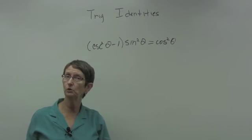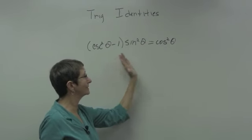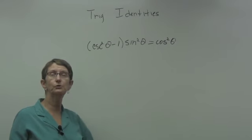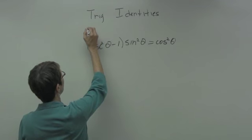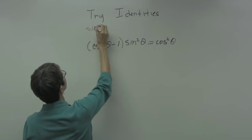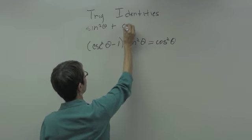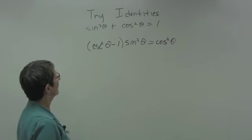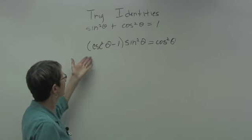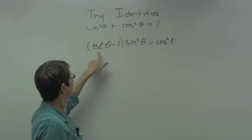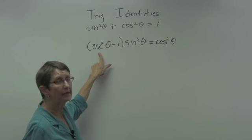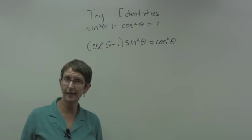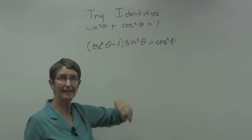In general, what we want to use when we're trying to get one side equal to another side, or just to simplify a trig expression, is to use the Pythagorean identity: sine squared theta plus cosine squared theta equals 1. I don't really have that here — I have a sine squared, but here's a cosecant squared. So cosecant we have to put in terms of sine or cosine, and then see if we can get to this identity.